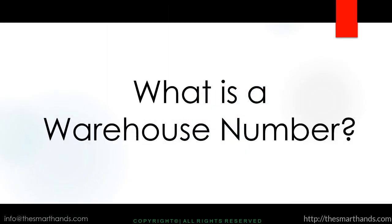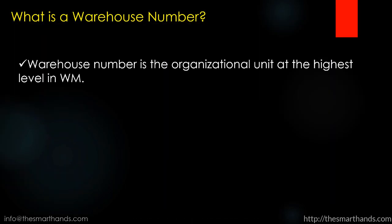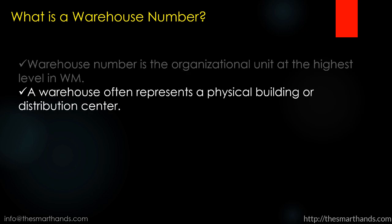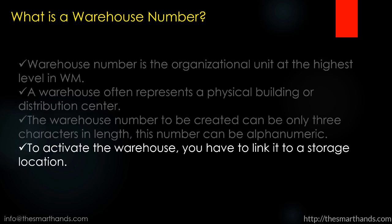Before we start, let us understand the definition of the warehouse number. The warehouse number is the org unit at the highest level in WM. A warehouse often represents a physical building or a distribution center. The warehouse number can be only three characters in length and can be alphanumeric. To activate the warehouse you have to link it to a storage location.